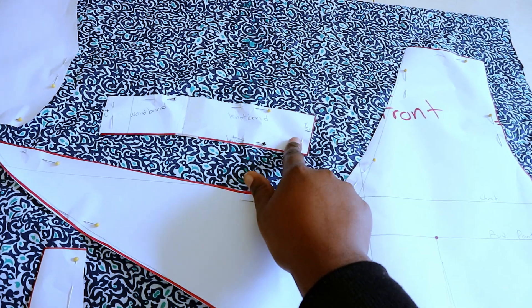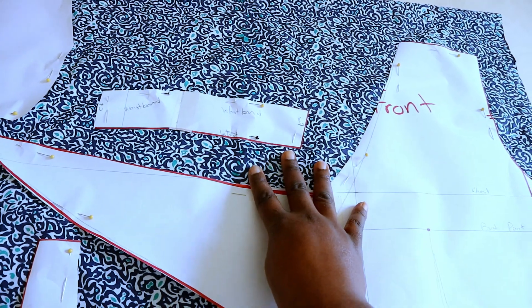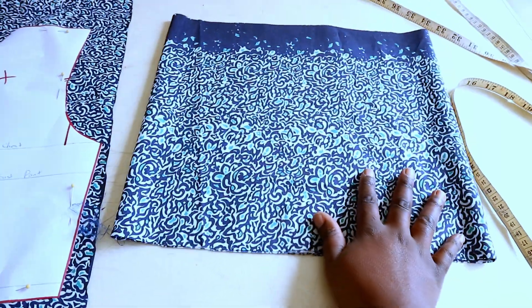After I was done cutting the peplum, I pinned the rest of the pattern on the fabric. We're going to cut four pieces for the front—two for the main pieces and two for the facing—and then you're going to cut out four waistbands.